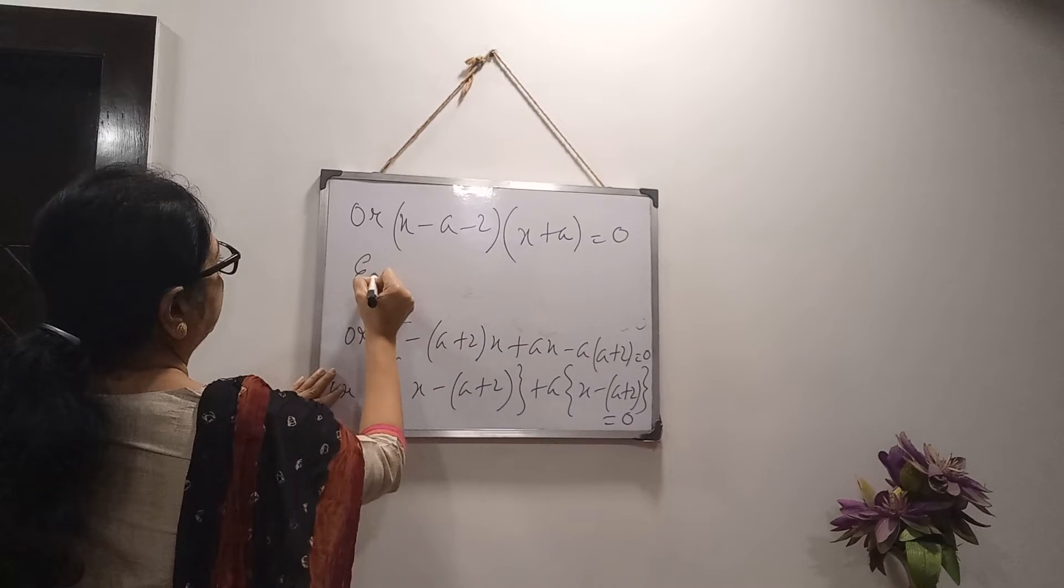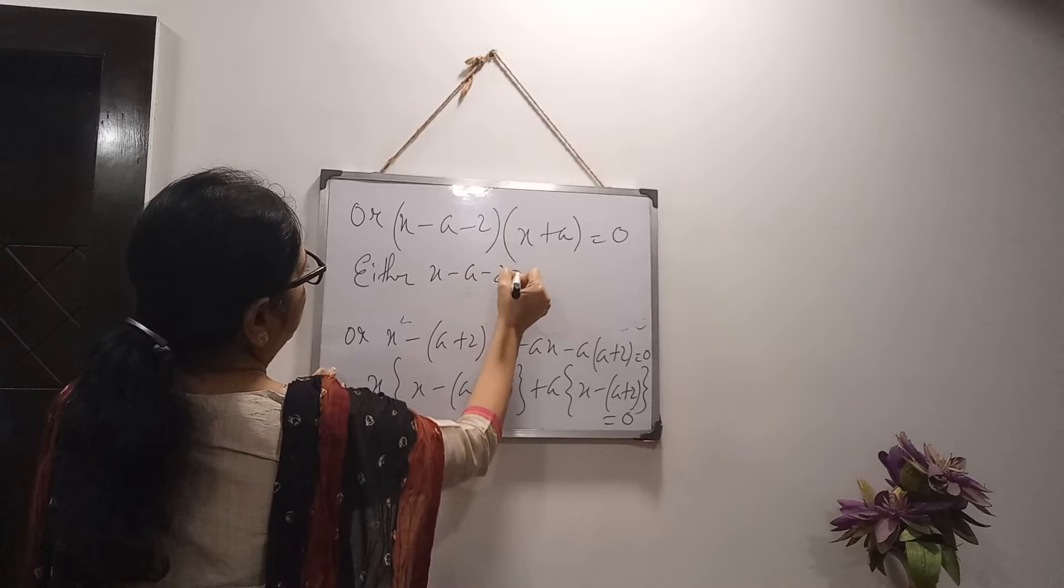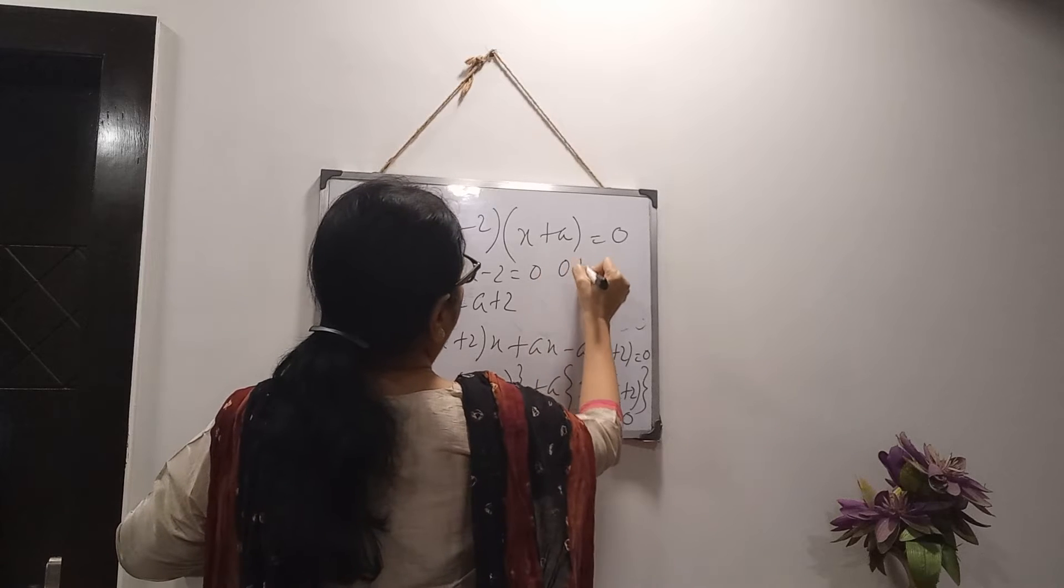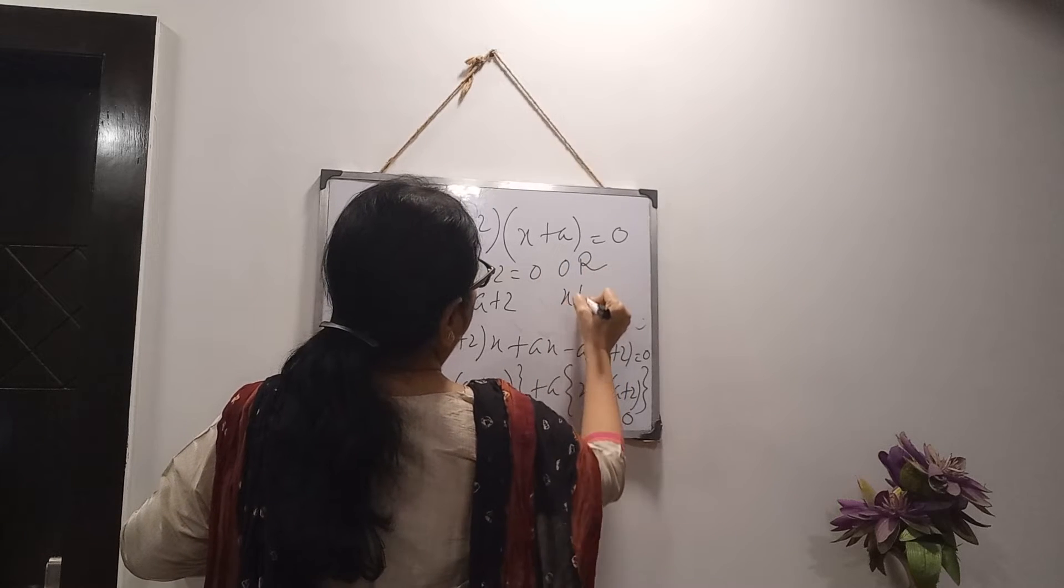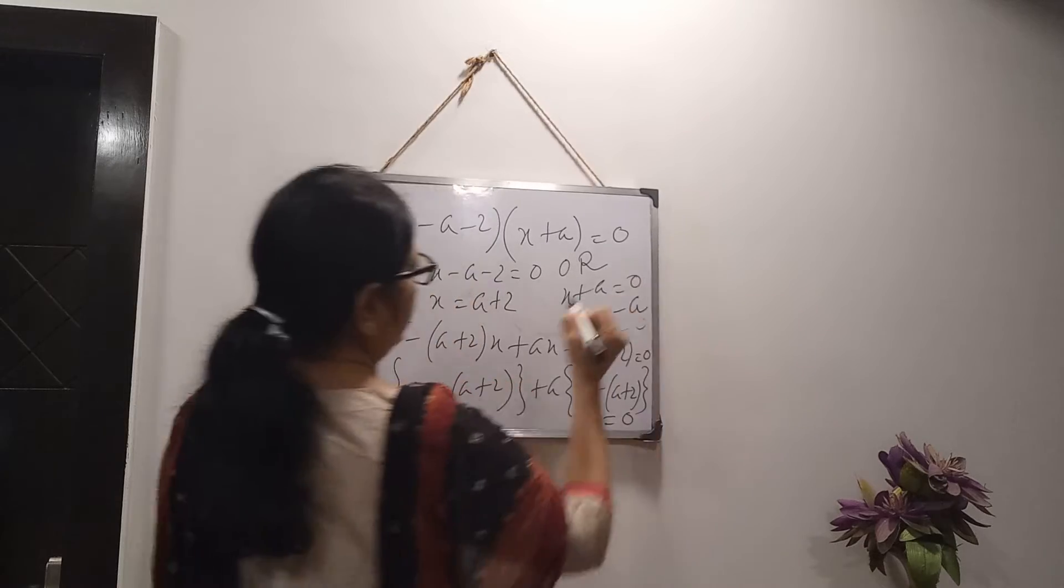x plus a equals to 0. So, either, this is 0. x minus a minus 2 is 0. So, x equals to a plus 2. Or, x plus a equals to 0. Therefore, x equals to minus a.